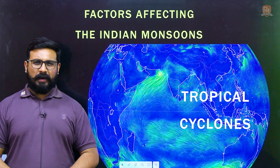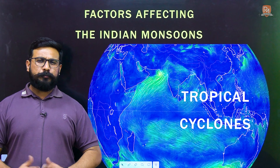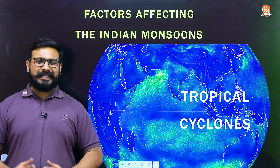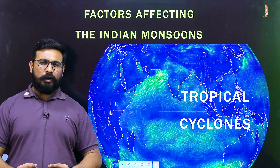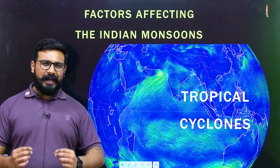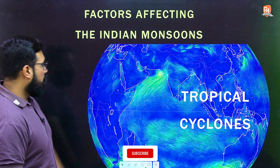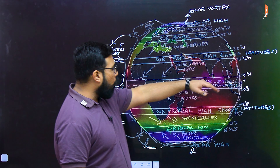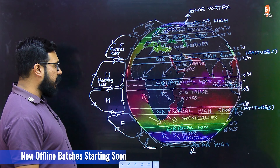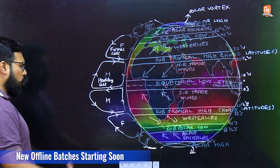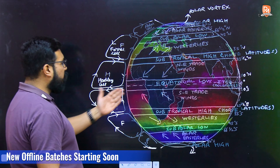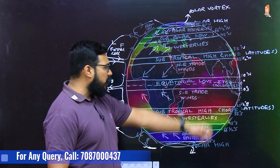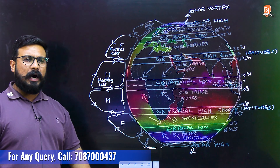A very warm welcome to part 3 in the special series on factors affecting the Indian monsoons. Let's analyze the role of tropical cyclones in the Indian monsoons. Tropical cyclones are born along the doldrums, that is the ITCZ, but they can never form when the ITCZ is at the equator, between the 5 degrees north and south latitudes.